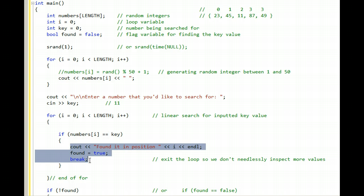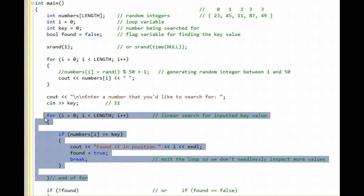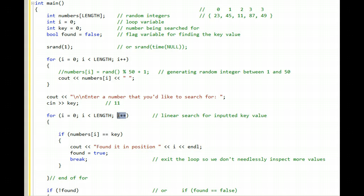So yet again we skip the if statement, and we cycle back up around the for loop, and we add 1 to i.